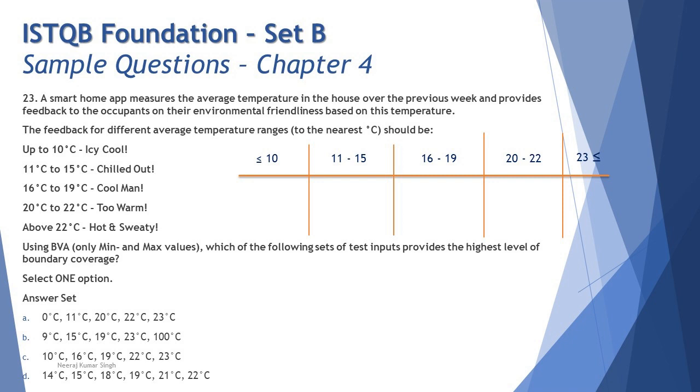Option C: 10, 16, 19, 22, 23 - all of them are boundary values. C covers five boundary values out of all those given to you. Coming to D, it says 14 - not a boundary value, 15 is, 18 is not, 19 is, 21 is not, and 22 is, which is again covering only three boundary values.